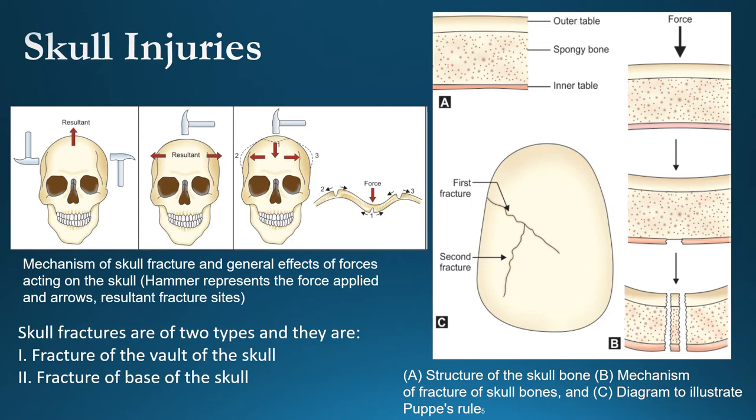Skull fractures are further divided by type of violence: direct violence — such as a hammer blow — and indirect violence. The kinetic energy formula (KE = ½mv²) is applied to understand the force applied to the bone. Base of skull fractures generally result from indirect force, such as a person falling from a building and landing on the buttocks or knees, transmitting pressure to the skull base.